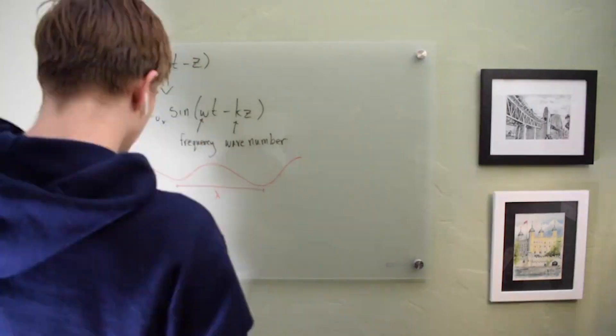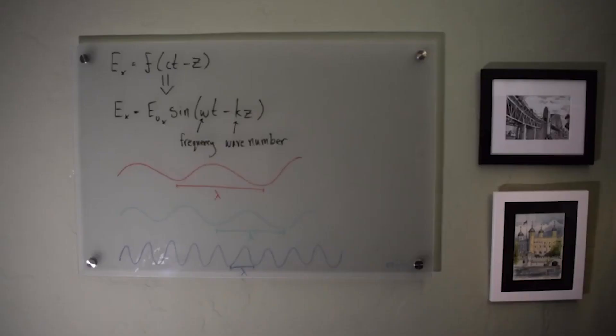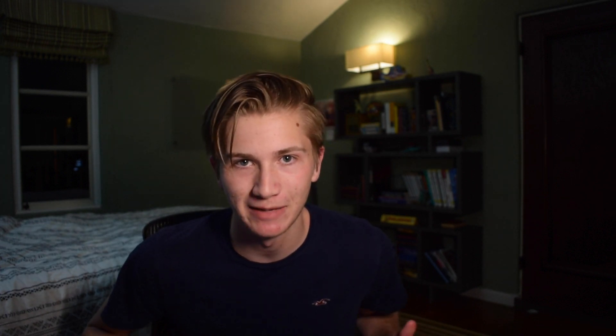As a reminder from last episode, a light's frequency tells us how quickly its electric and magnetic fields are oscillating. Red light has the lowest frequency of visible light, while violet light has the highest. So let's see if this high frequency but low intensity ultraviolet lamp can do the trick.